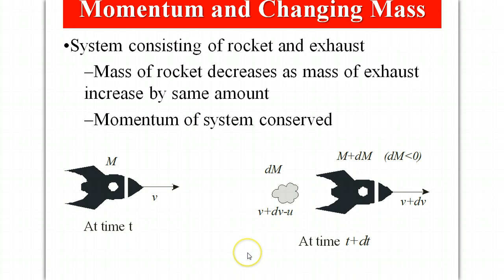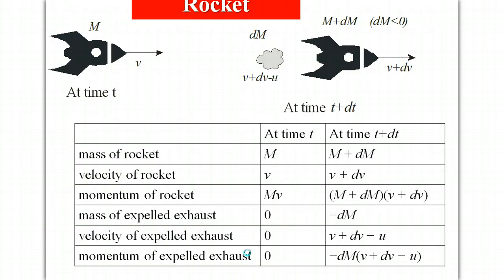So we can use the conservation of momentum and so what we're going to do is list at time t all we have is the mass of the rocket velocity of the rocket so its momentum is Mv.